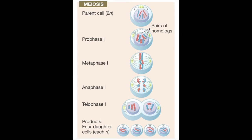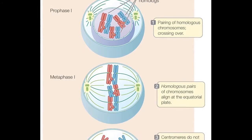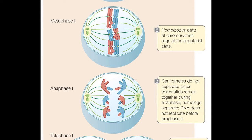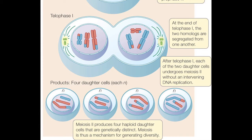Meiosis is the division of a diploid nucleus to produce four haploid daughter cells. In meiosis, two sets of chromosomes are divided among four daughter cells, each of which has half as many chromosomes as the original cell. The four haploid cells are the result of two successive nuclear divisions. Meiosis II produces four haploid daughter cells that are genetically distinct. Meiosis is thus a mechanism for generating diversity.